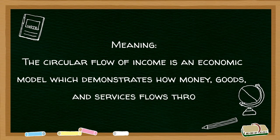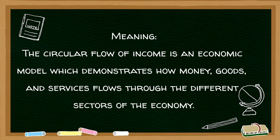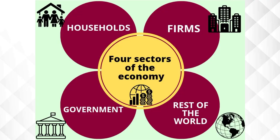Let us begin with the definition of circular flow of income. The circular flow of income is an economic model which demonstrates how money, goods and services flow through different sectors of the economy. The economy can be divided into four sectors: households or individuals, firms or businesses, government, and the rest of the world, which represents the foreign sector.